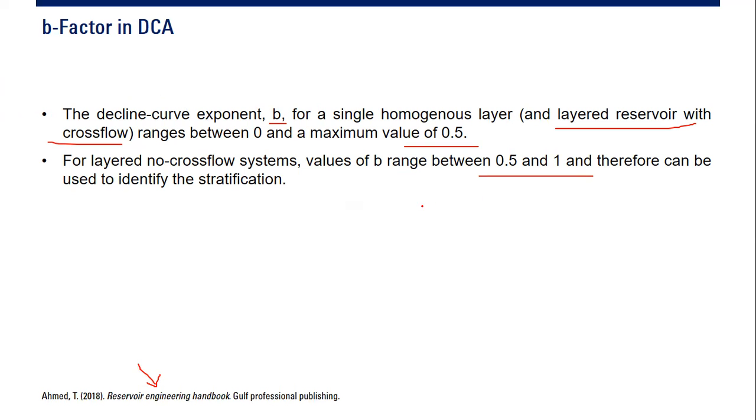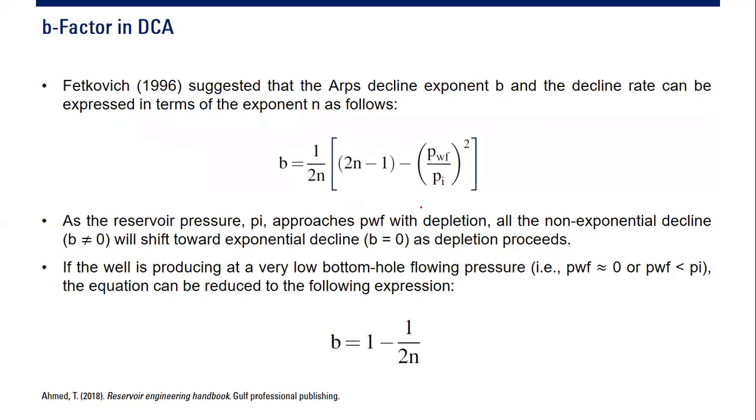Fetkovich 1996 suggested that the Arps decline exponent and the decline rate can be expressed in terms of exponent n as follows. We have exponent n in back pressure calculation when you perform well testing deliverability analysis. We can correlate b and n. That's very interesting. Fetkovich is very popular in reservoir engineering and in decline curve analysis.